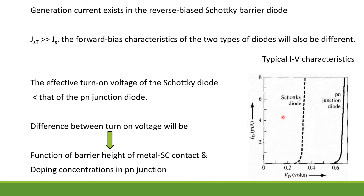Here in this figure, we can see the typical I-V characteristics of the two diodes. The effective turn-on voltage of the Schottky diode is much less than that of the P-N junction diode. Thus, the difference in turn-on voltage is a function of the barrier height of the metal-semiconductor contact and the doping concentration in the P-N junction.